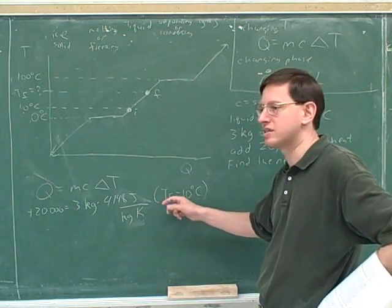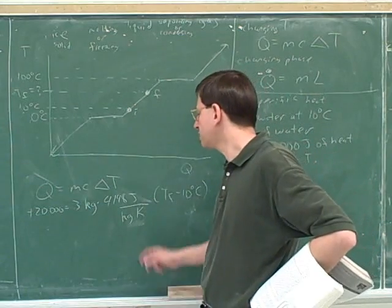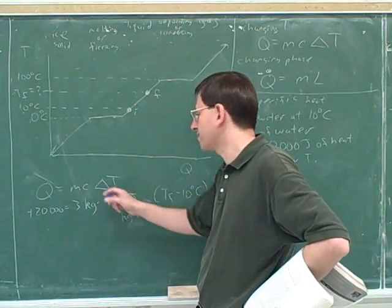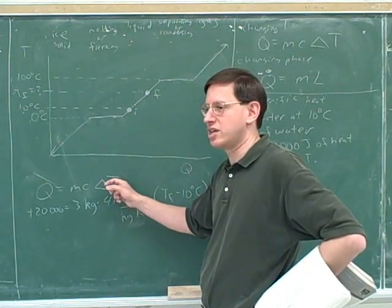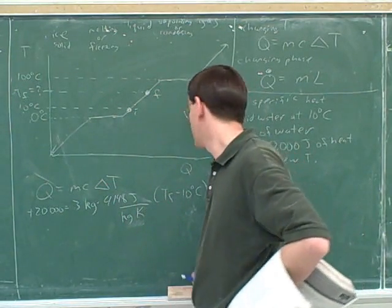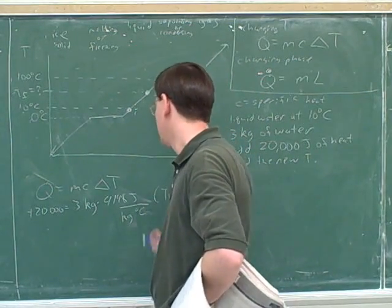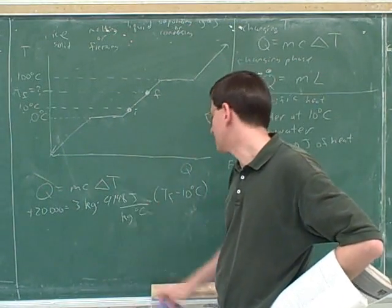We're not actually going to do that. But yeah, you could do this. By the way, notice that this was in Kelvins, but it doesn't matter because Kelvins and Celsius are the same for delta T. A change in temperature in Kelvin is the same as the temperature in Celsius. So we might as well just put this into Celsius here.